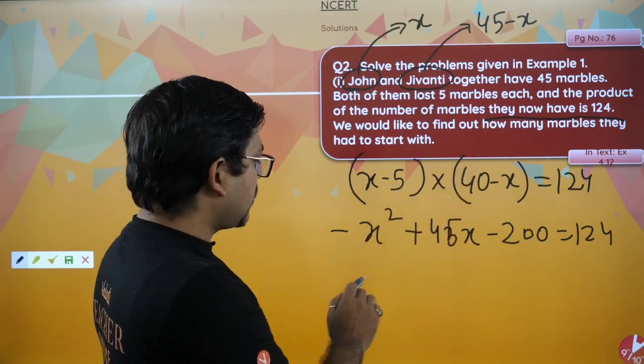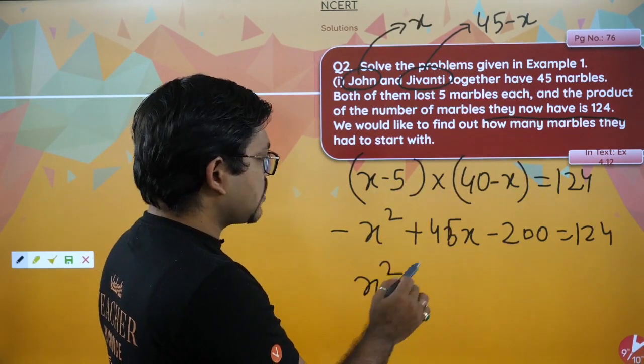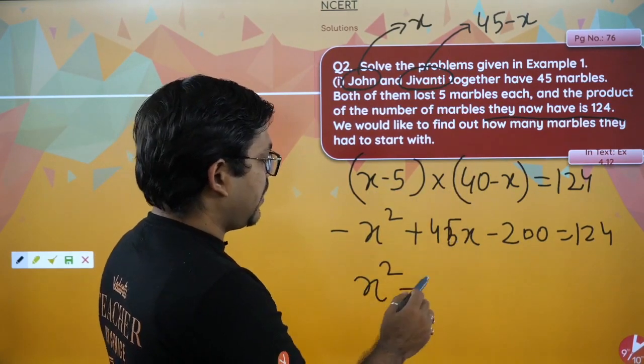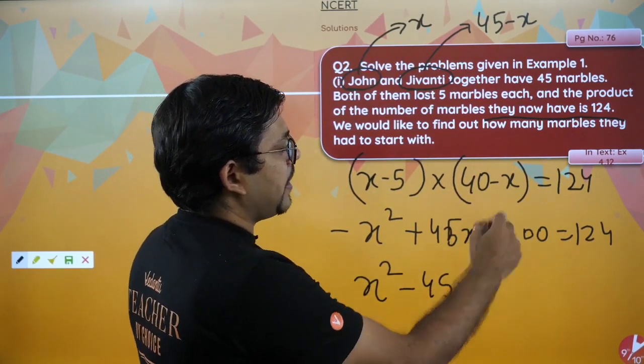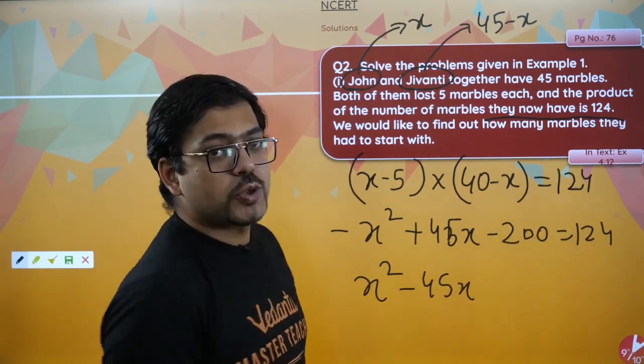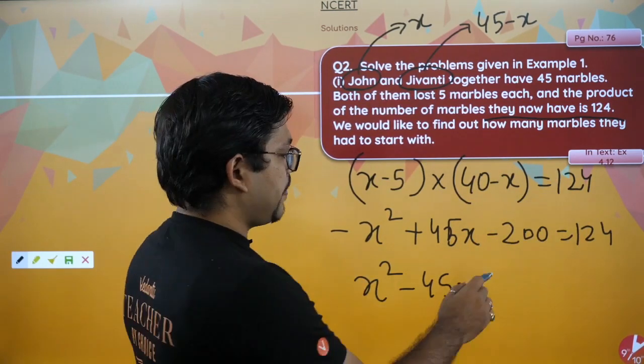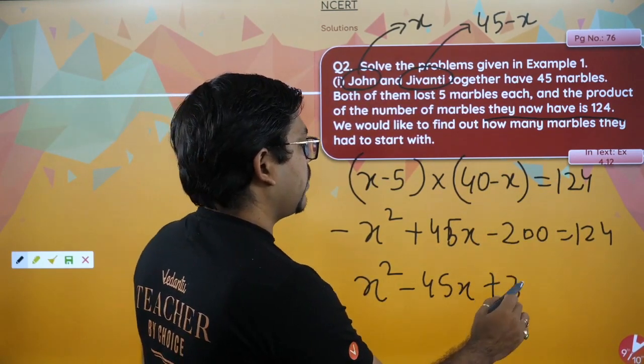Rearranging: x squared minus 45x plus 200 moved to the other side gives x squared minus 45x plus 324 equals 0.